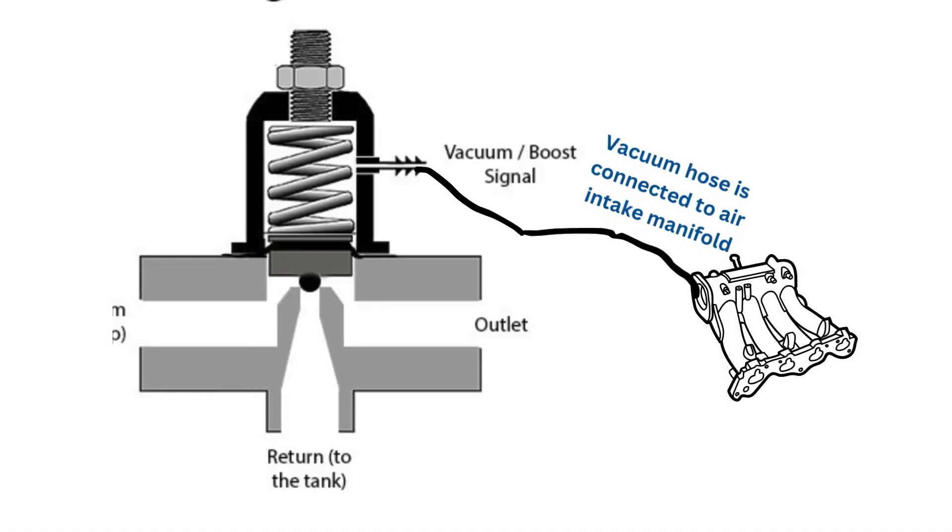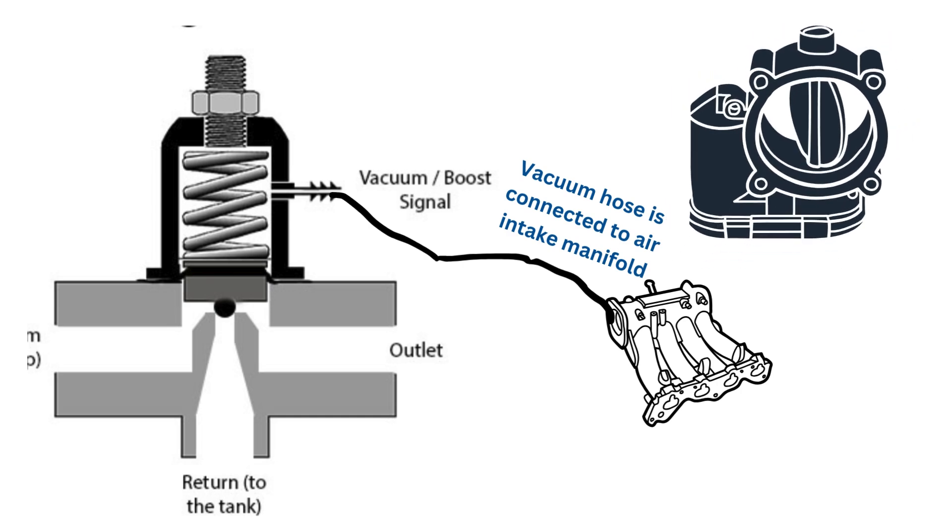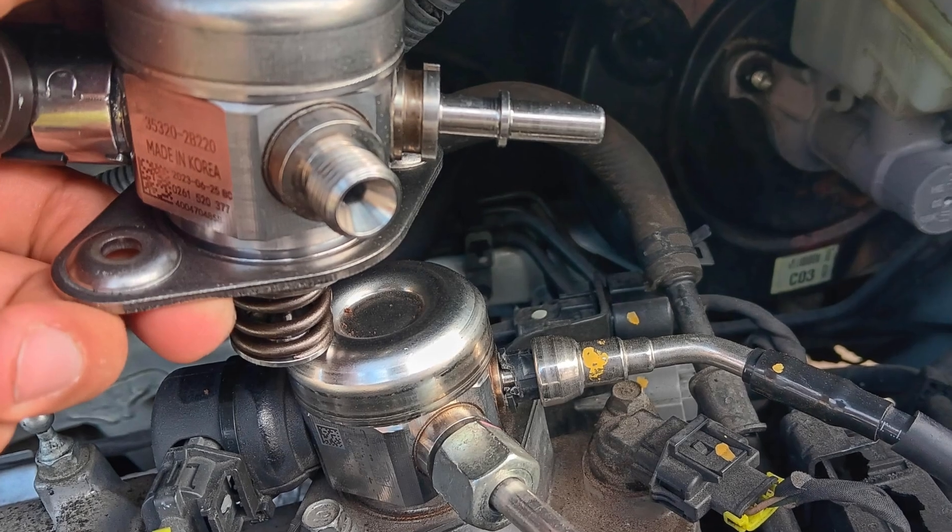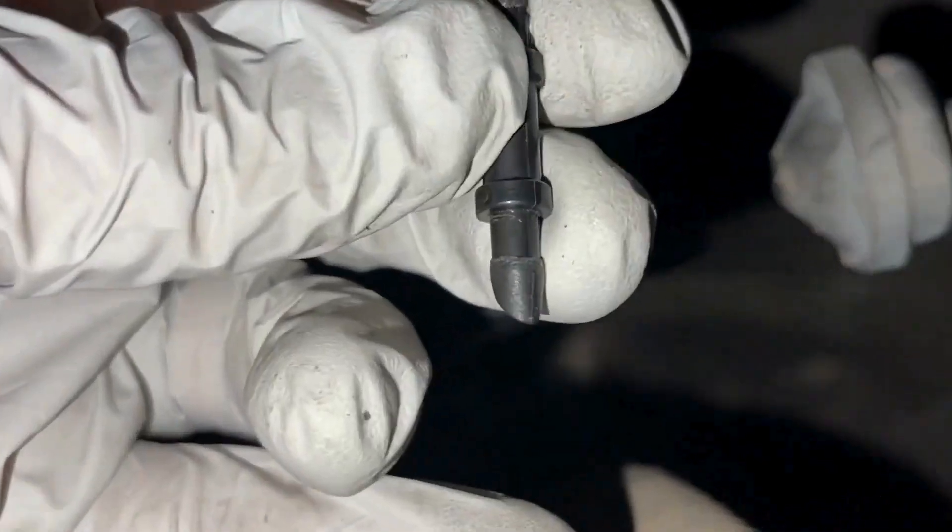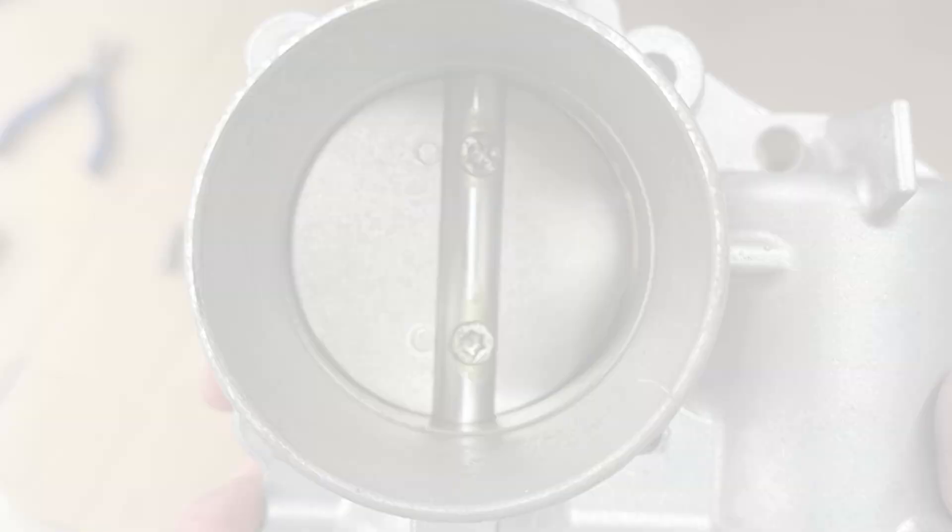One end of the fuel pressure regulator is linked to the engine air intake system. That air is also passed through the throttle body. If fuel pressure regulator is bad, excessive fuel vapors will pass through it and damage throttle body with carbon deposits.